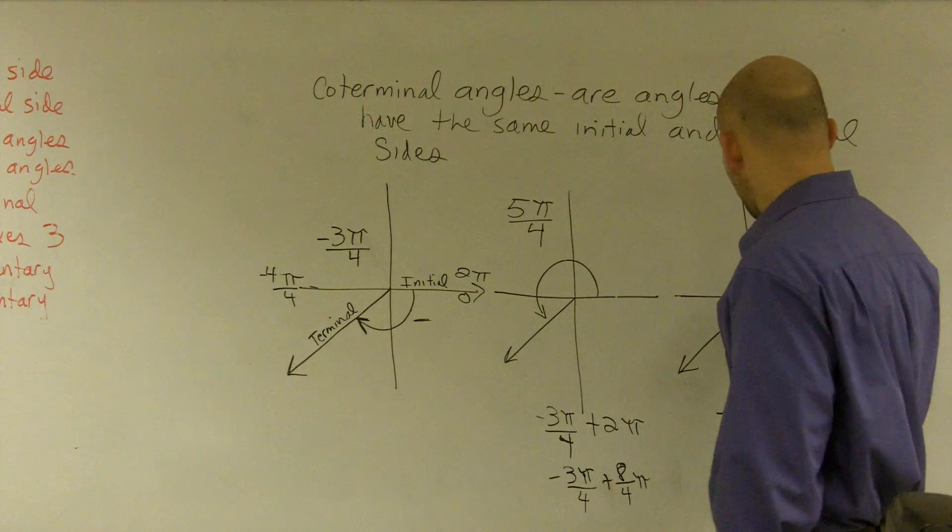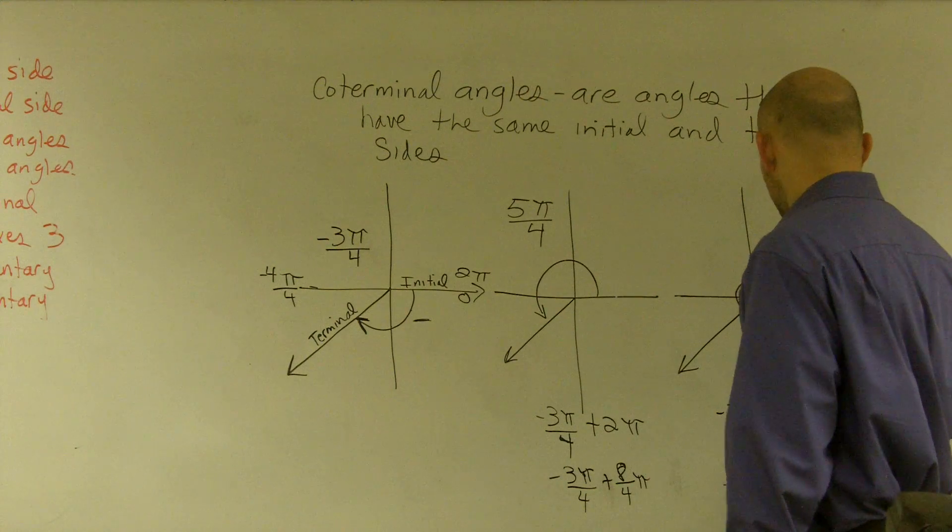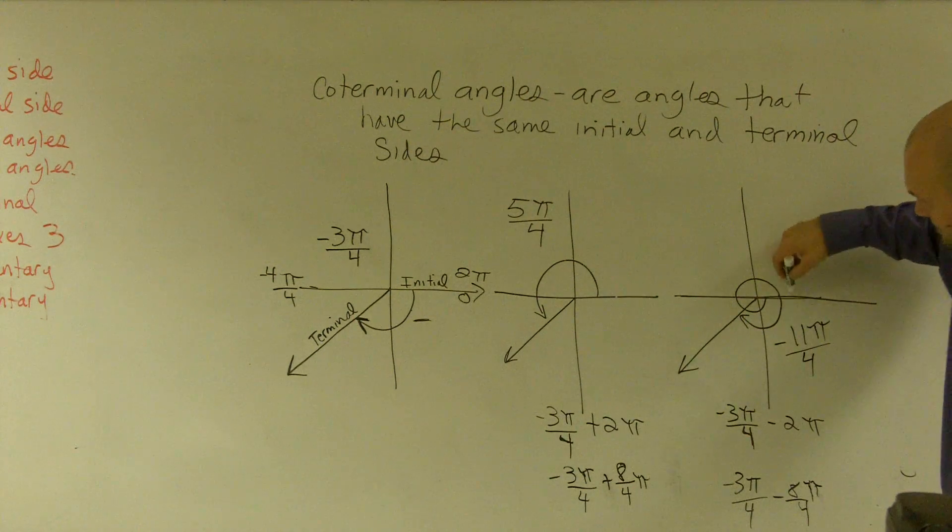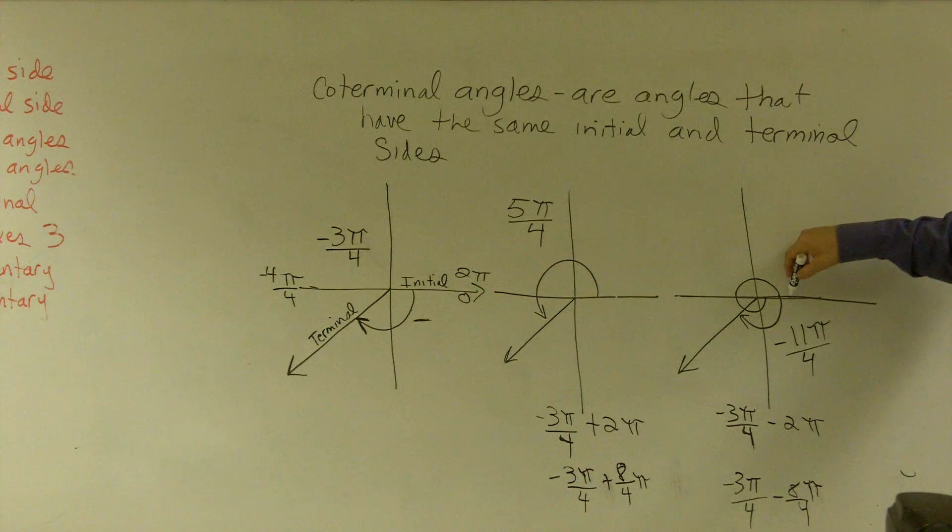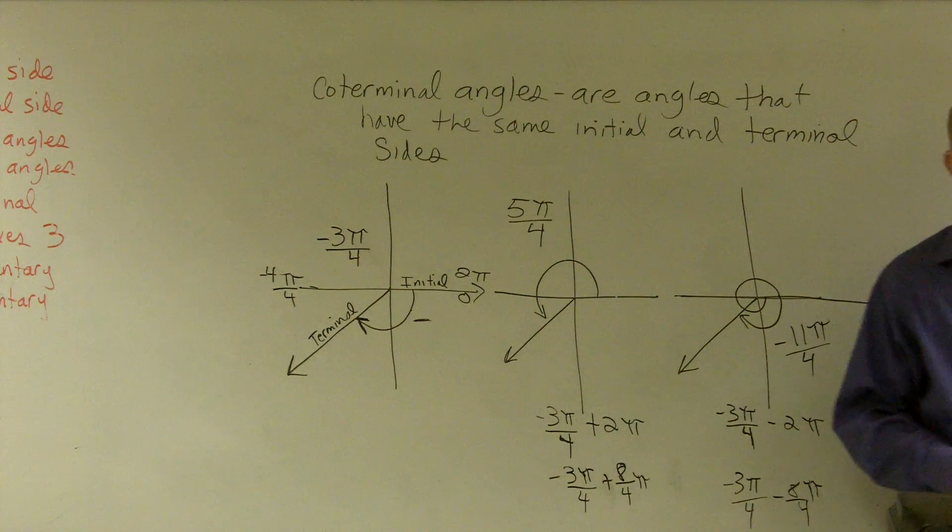Then here, this one's going to give us negative 11π over 4, which if we did this, well, all the way around is negative 8, 9, 10, 11. So if you guys see how that works,